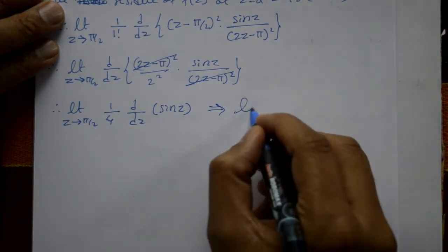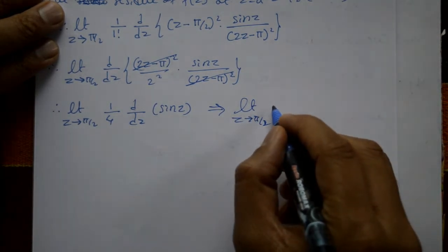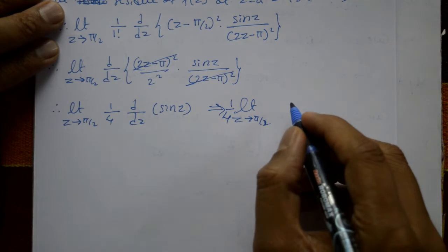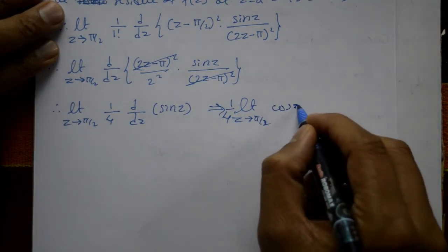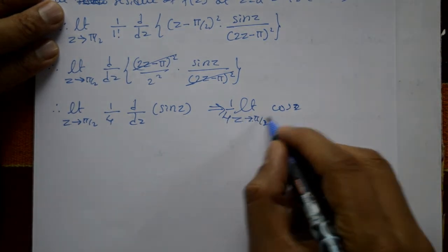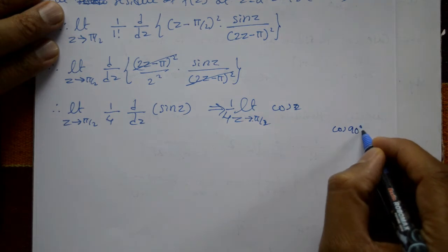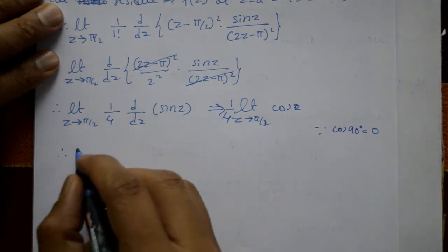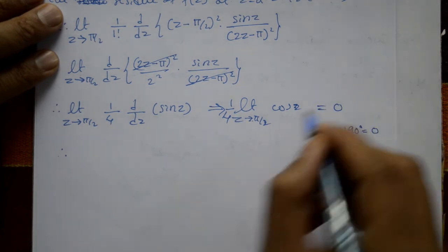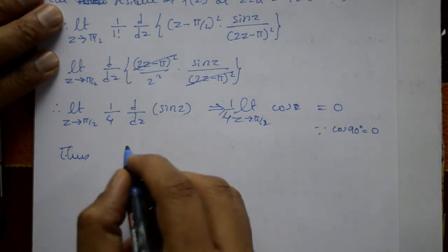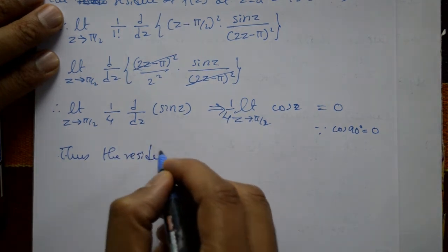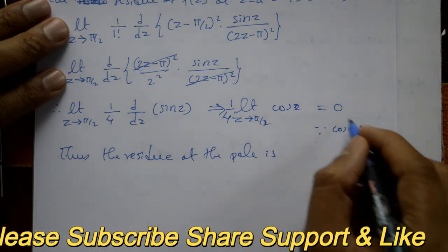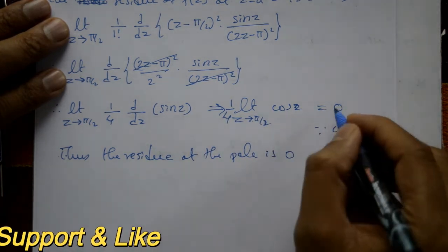Taking the limit as z tends to π/2, we get (1/4) · cos(π/2). Now cos 90° = 0, so cos(π/2) = 0. Therefore this equals 0. Thus the residue at the pole z = π/2 is 0.